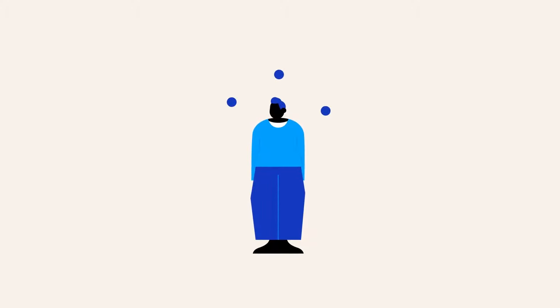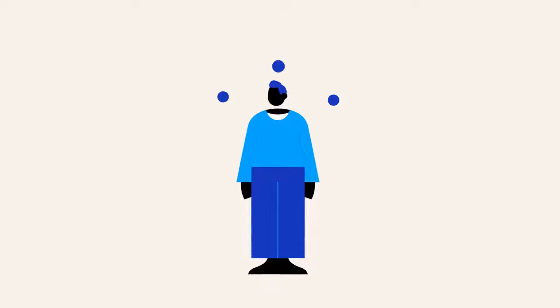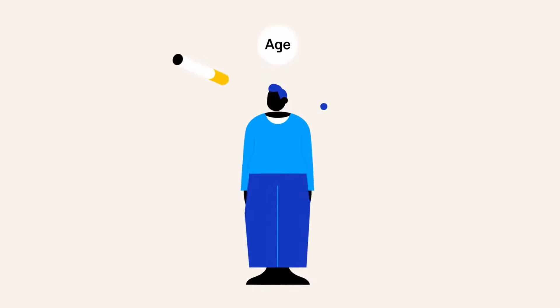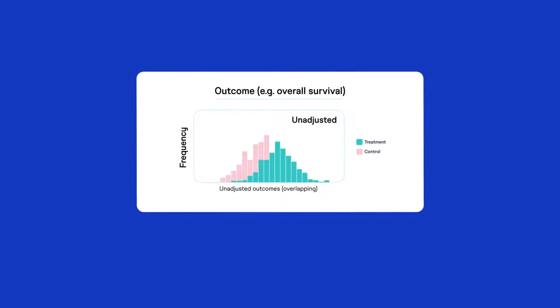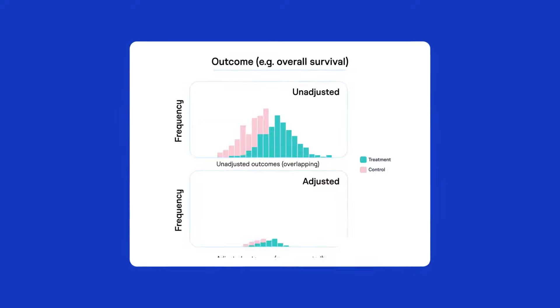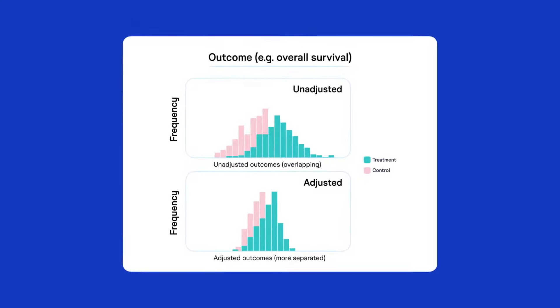Covariates are patient characteristics that influence the outcome of interest of the trial, such as age, smoking status or cancer stage. Covariate adjustment helps improve the efficacy analysis of randomized controlled trials by accounting for the influence of these patient characteristics on the outcome to improve the measurement of treatment effect.